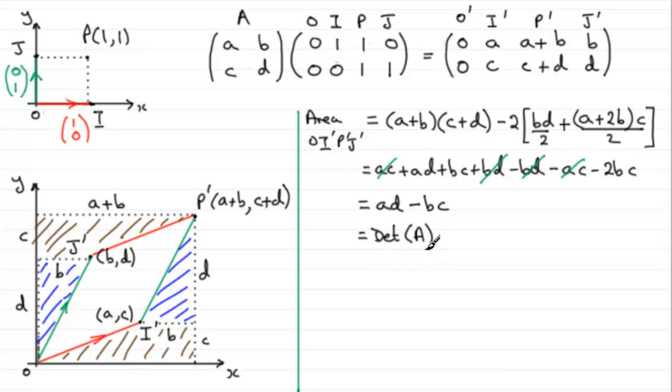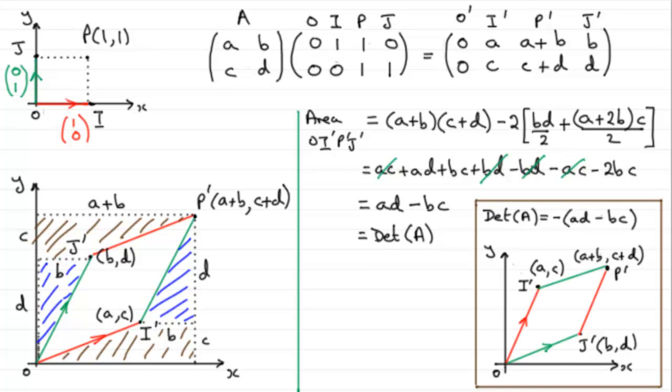Now, determinants aren't necessarily always going to be positive. They can be negative. So what happens if we end up with a negative determinant for a transformation of the unit square? Well, all that happens is that our vectors for I prime and J prime have just switched positions. You'll notice that I prime is now above J prime, unlike what we had over here. It appears that they've just switched over. However, the area is going to be exactly the same. We still have our parallelogram. The same parallelogram, actually. It's just flipped over.